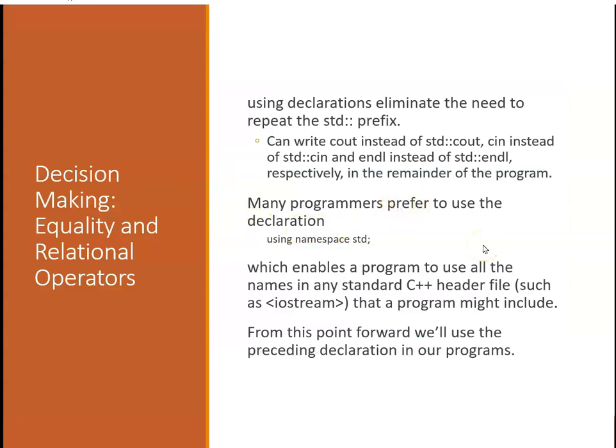We can use the using declaration as shown to eliminate the need to repeat the standard prefix. We can write cout instead of std::cout, cin instead of std::cin, and it makes your programs a little easier to read. You don't have to do this, but it's cleaner. Going forward, we're going to use this notation because it's simpler.